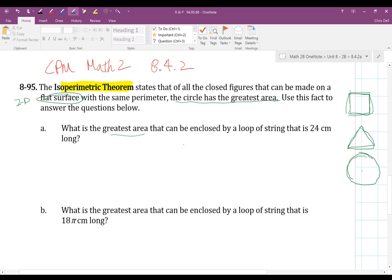It says, what is the greatest area that can be enclosed by a loop of string that is 24 centimeters long? So this loop of string that I've got here is 24 centimeters long. So that 24 centimeters represents the circumference. That is the circumference because it's the perimeter, the distance around a circle.